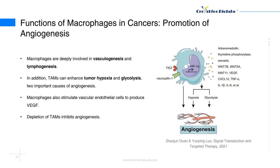Promotion of angiogenesis: By expressing WNT7b, WNT5a, WNT11, VEGFC, VEGFD, and other factors, macrophages are deeply involved in vasculogenesis and lymphogenesis. In addition, tumor-associated macrophages can enhance tumor hypoxia and glycolysis, two important causes of angiogenesis. HIF1-alpha is a protein induced in hypoxia conditions. It has been demonstrated that HIF1-alpha is an important transcriptional factor regulating the transcription of angiogenesis-associated genes, such as VEGF, bFGF, PDGF, and PGE2, in tumor-associated macrophages.